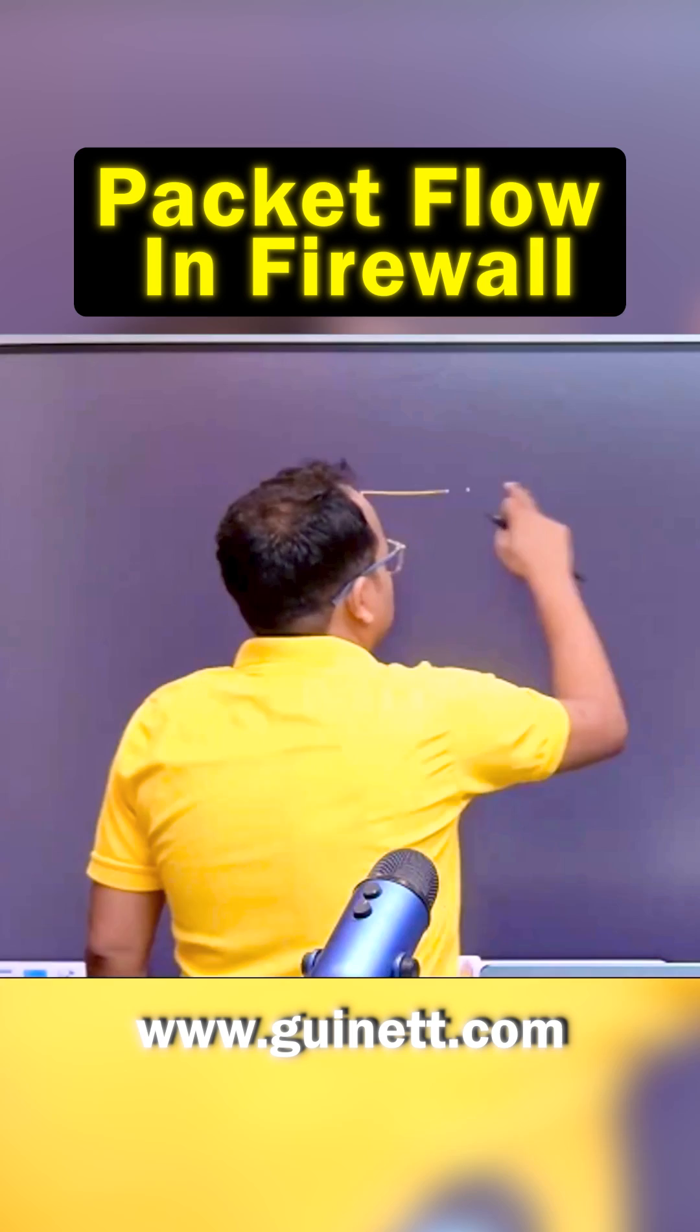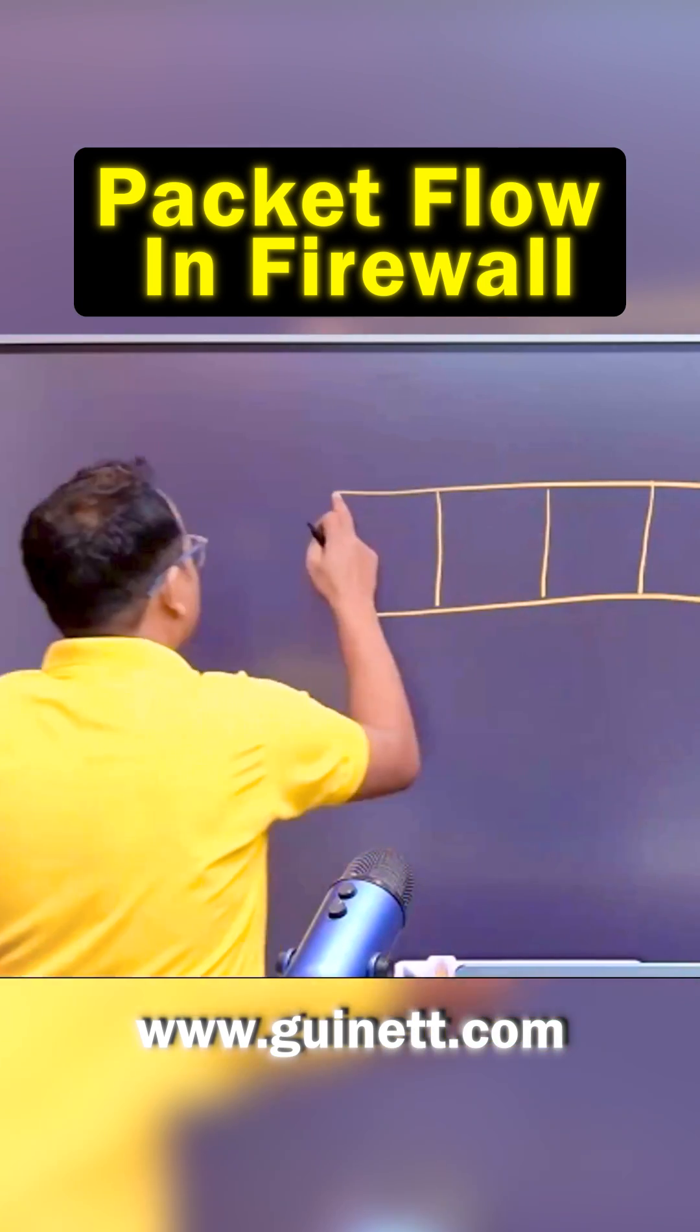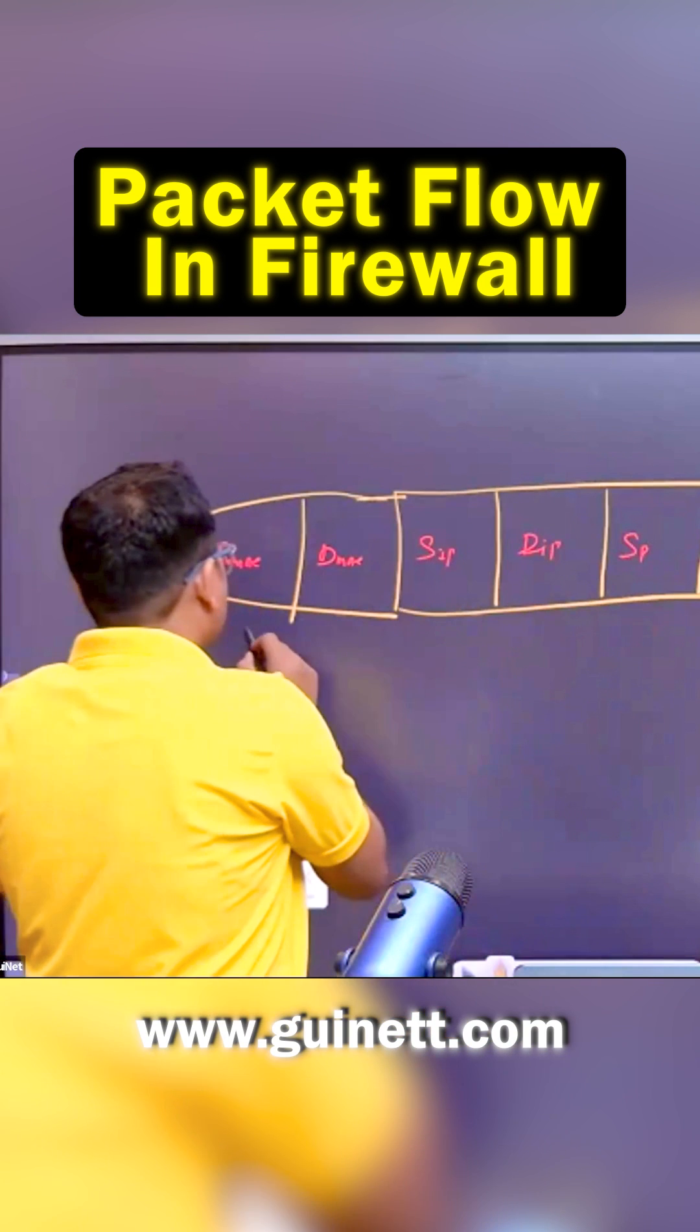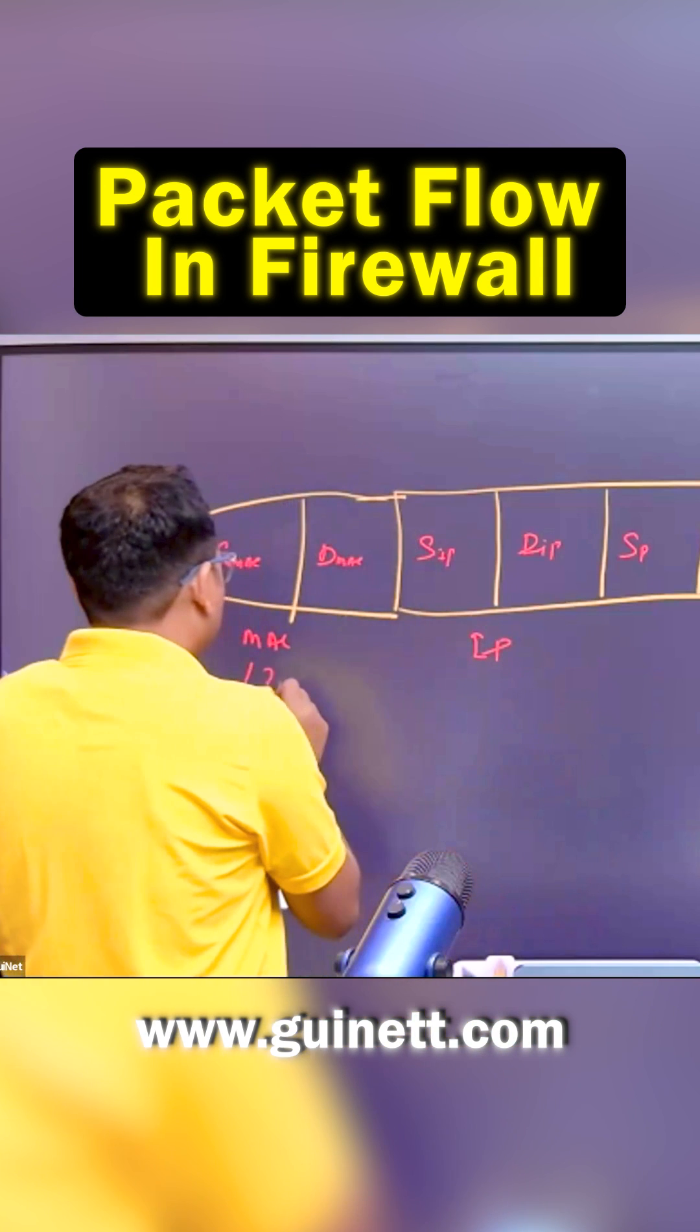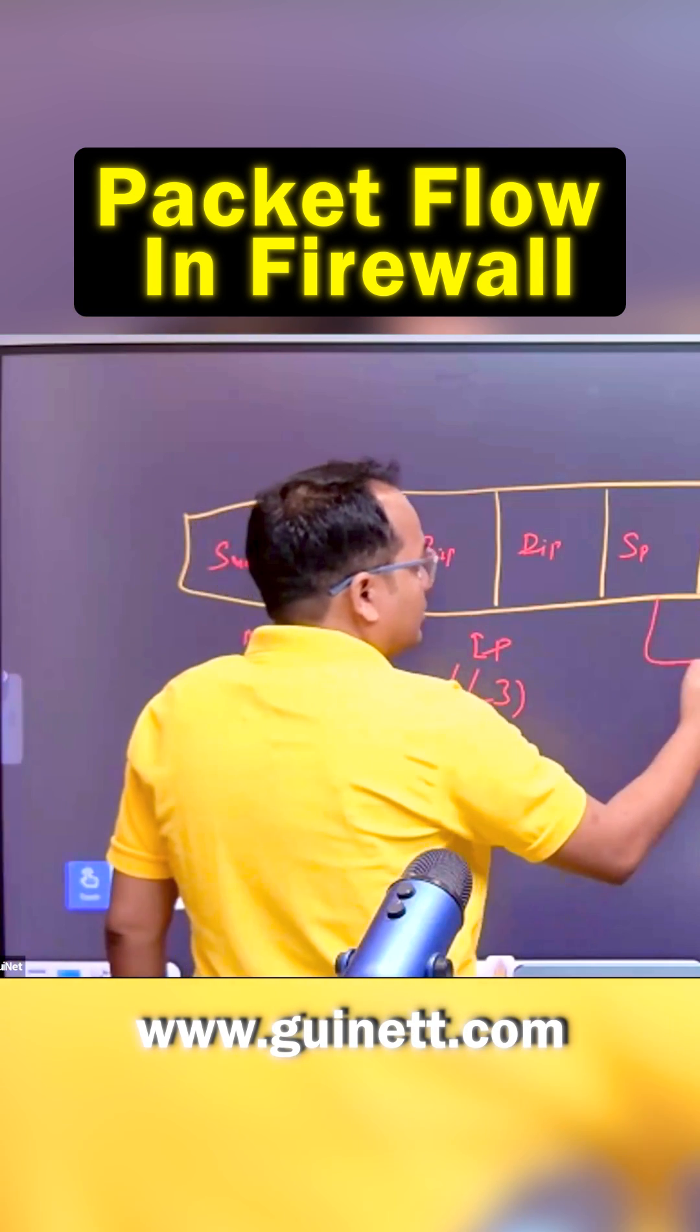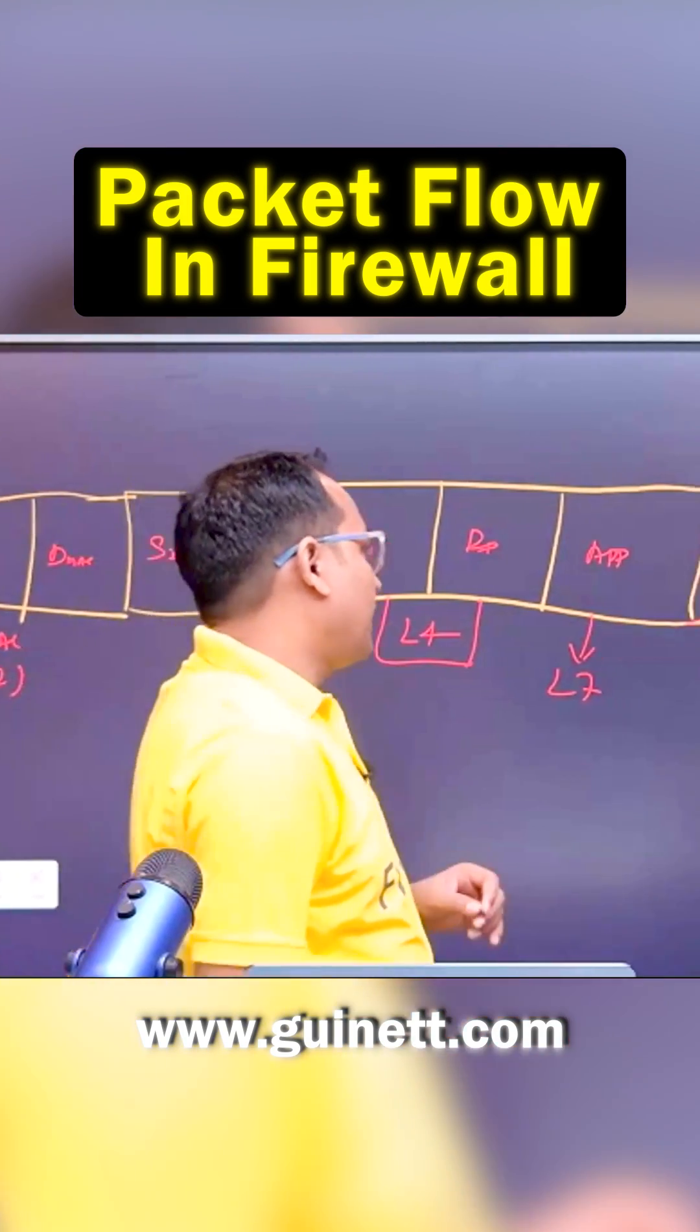Let's suppose that this is one of the packets. This packet has multiple information: we have the source IP, we have the destination IP, which means we have the Layer 2 information - this is the MAC information. This is my IP information, that is Layer 3. This is Layer 2, this is going to be Layer 3, this is going to be my Layer 4, and this is going to be my Layer 7.